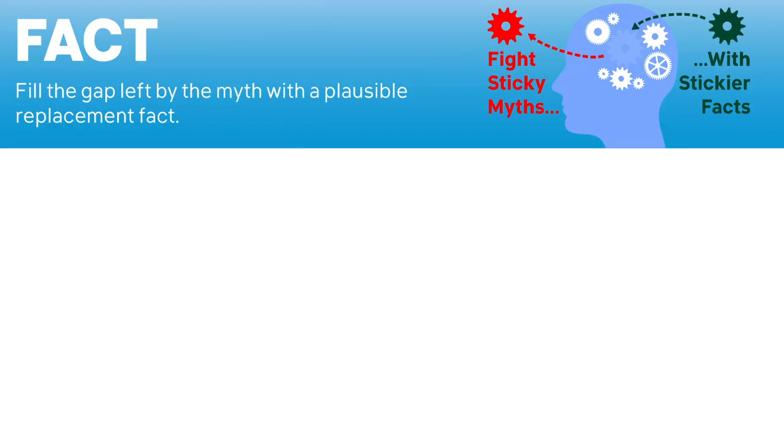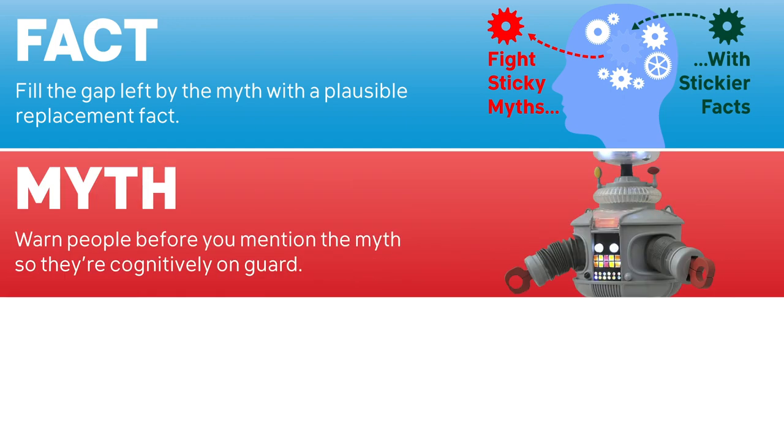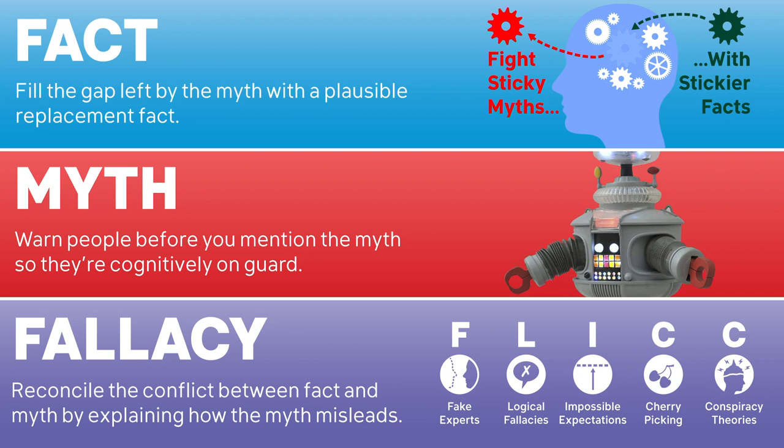So to reiterate, here are the key principles of debunking. First, lead with a sticky fact that replaces the myth. Second, warn people before you mention the myth. Third, explain the fallacy the myth uses to distort the facts. Debunking misinformation doesn't have to be a necessary evil — creating gaps then filling those gaps with facts and critical thinking can be a powerful form of storytelling. Presenting conflicting information then resolving the conflict is the key to building a coherent and effective rebuttal.